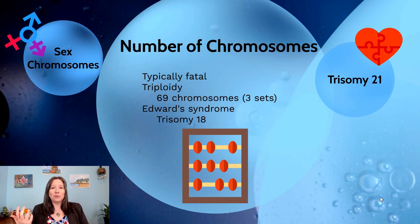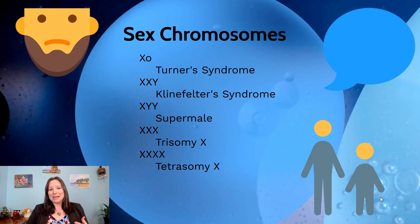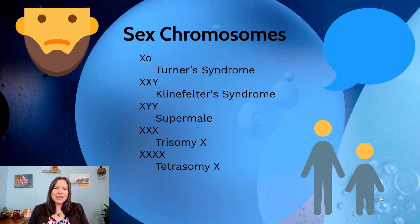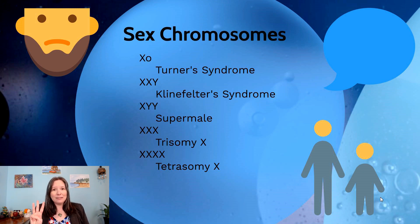There are two exceptions where atypical chromosome numbers are not fatal: sex chromosome atypicalities and trisomy 21. We previously discussed Turner syndrome, where a person has only one X chromosome and no second X or Y, and Klinefelter syndrome, where a person has an extra sex chromosome in an XXY pattern. Klinefelter syndrome tends to be fine — the individual has atypical sex characteristics but it doesn't significantly impact their physical health.